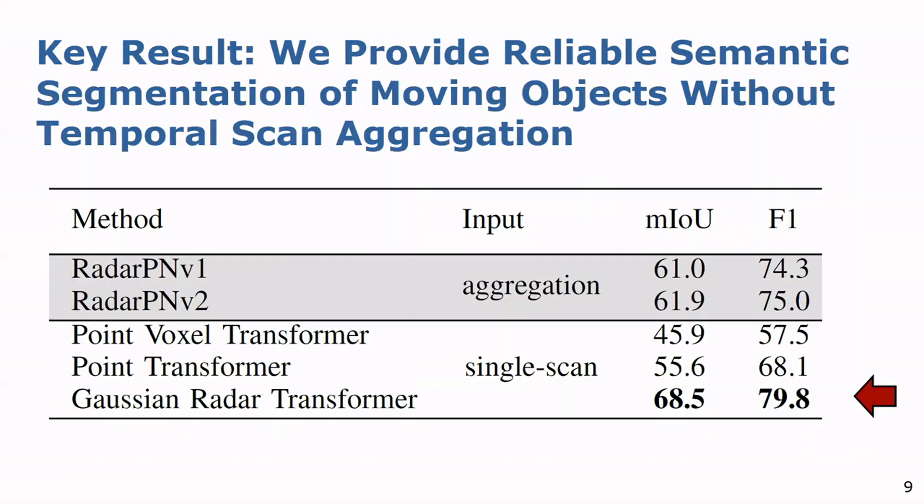We perform the evaluation on the radar scenes dataset and compare our Gaussian radar transformer with state-of-the-art methods. The hybrid approach of the point-voxel transformer induces discretization artifacts due to voxelization, which leads to information loss that cannot be compensated by the transformer part. However, the point transformer also struggles to extract discriminative features from sparse radar point clouds. Therefore, the combination of our Gaussian transformer layer and the adaptive pooling operations are essential to improve the mIoU by more than 10 percentage points.